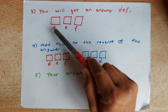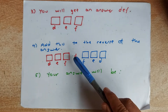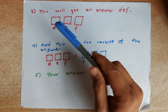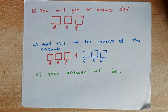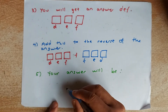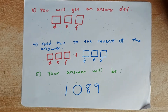So now you have another answer DEF. The last step you're going to do is add the reverse of that answer. So if the answer was 456, you're going to add 654 in the last step. No matter what number you chose, your final answer will be 1089.